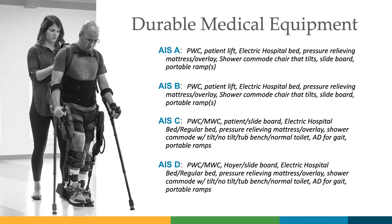For durable medical equipment: ASIA A and B need power wheelchairs, patient lift systems, electric hospital beds, pressure relieving mattress or overlay, shower commode chairs with tilt, slide boards, and portable ramps. For ASIA C and D: power wheelchairs or potentially manual wheelchairs, slide board, electric hospital beds, potentially a more normal bed, pressure relieving mattress or overlay, shower commode with or without tilt — maybe a tub bench or normal toilet depending on abilities. An assistive device for gait if they're able to reach that point, portable ramps if using wheelchairs. ASIA D with stronger muscles below the level of injury can move more freely and potentially decrease the amount or kind of durable medical equipment needed.